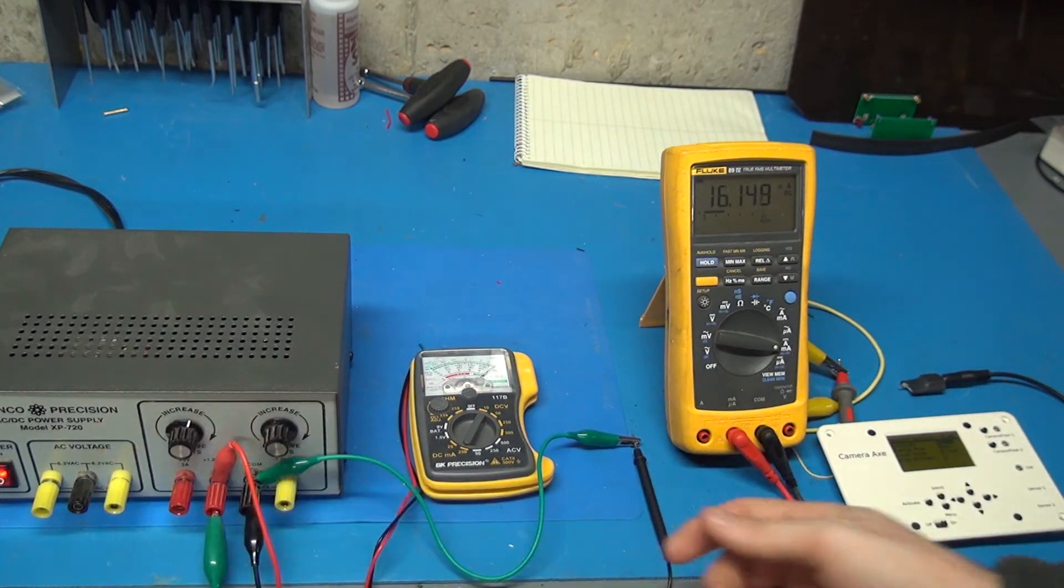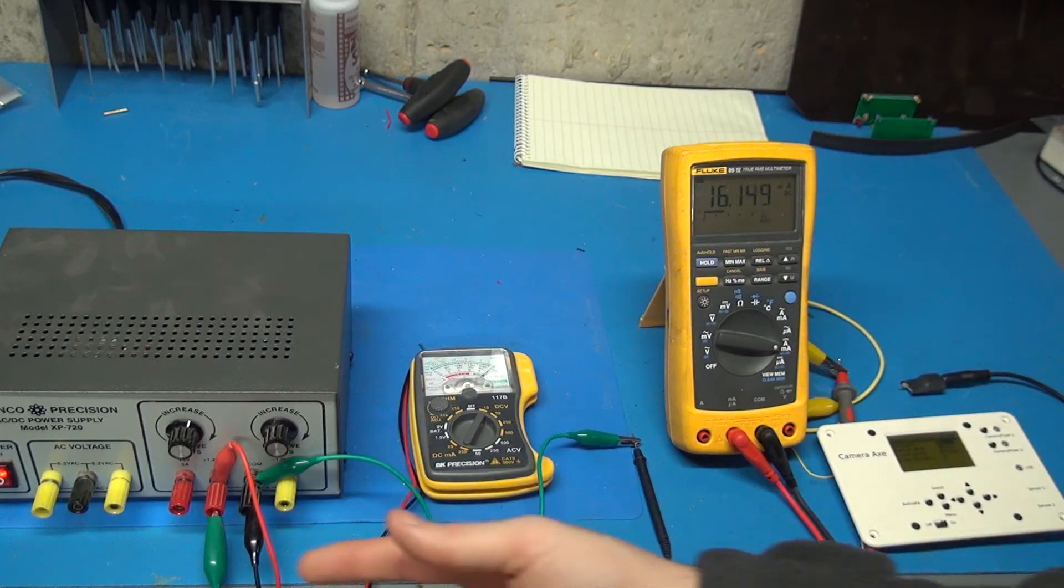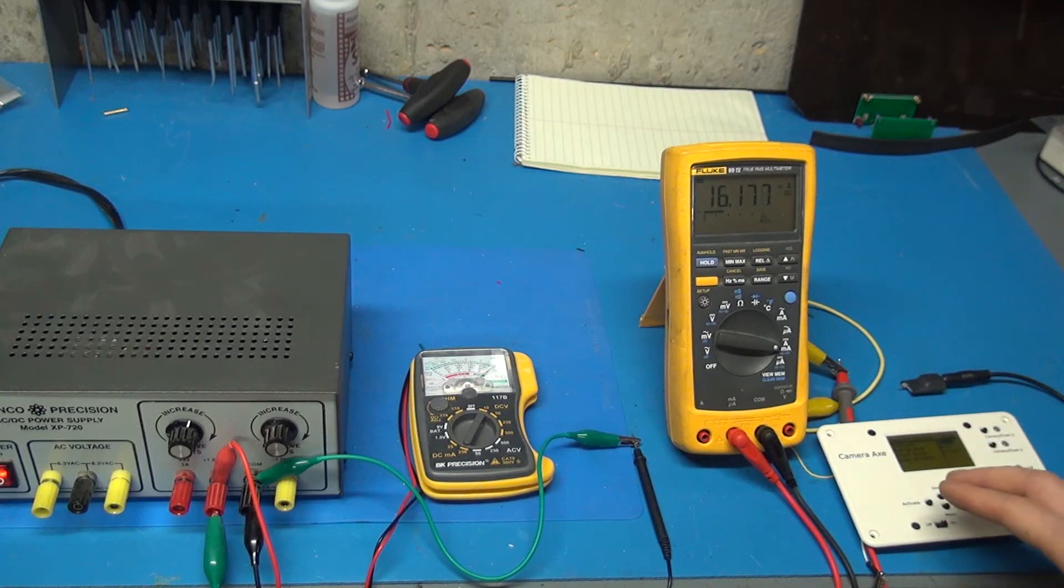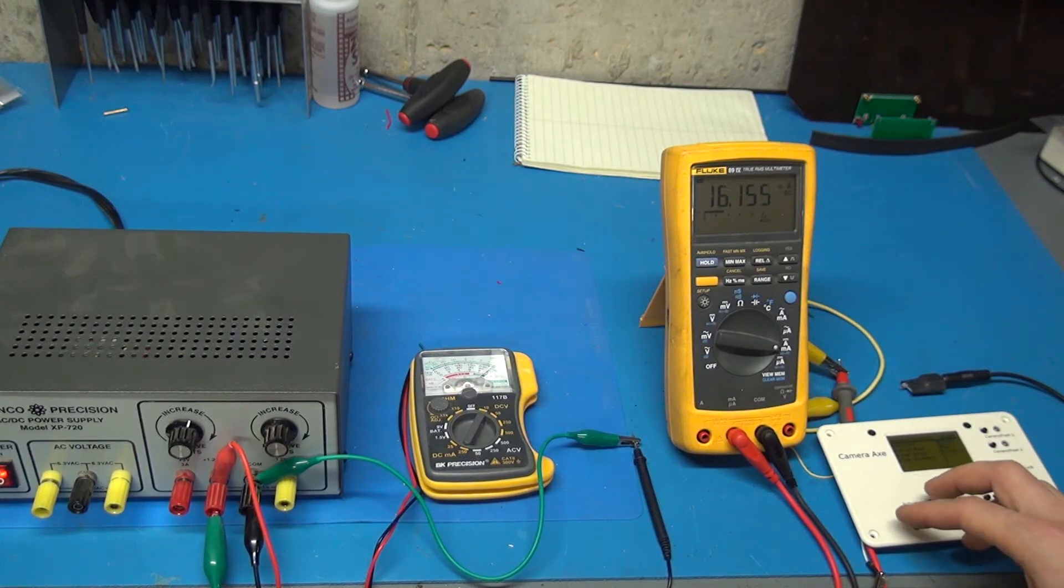What that means is I can simplify the problem by just looking at milliamp hours being consumed, assuming your batteries have enough voltage to provide the minimum voltage for the Camera Axe, which is about 6 volts.